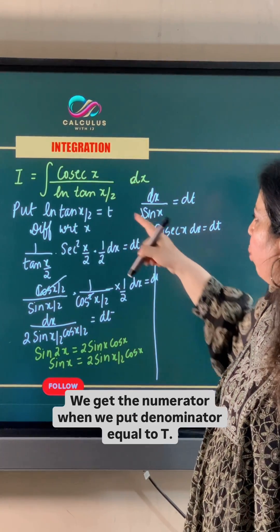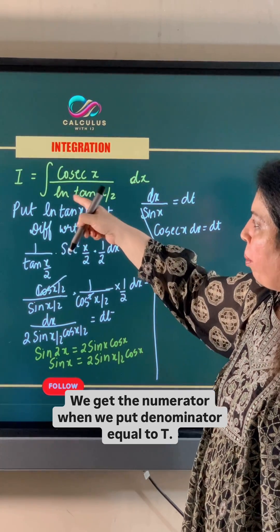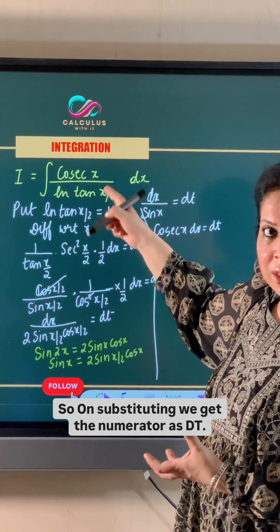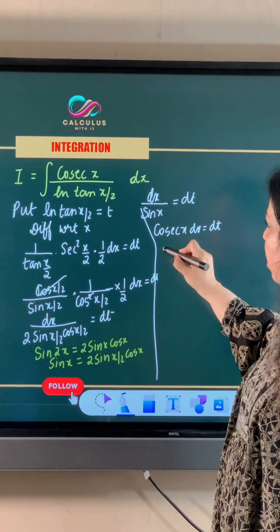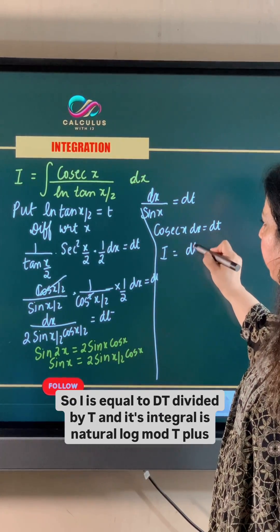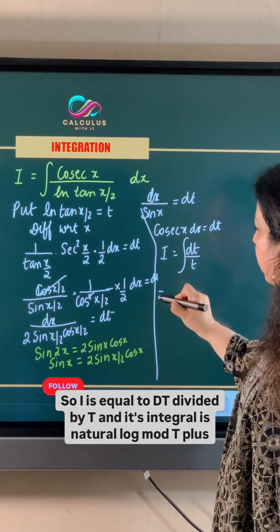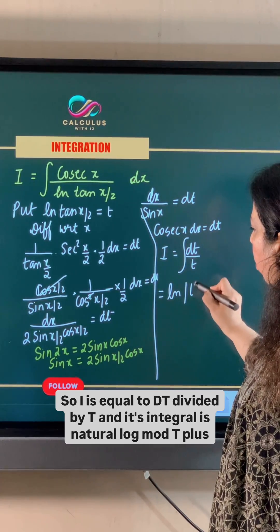We get the numerator when we put denominator equal to t. So on substituting we get the numerator as dt. So I is equal to dt divided by t and its integral is natural log mod t plus c.